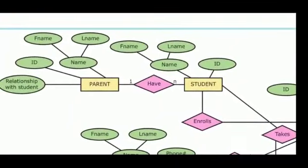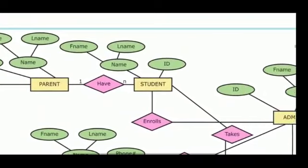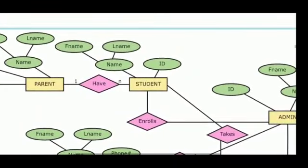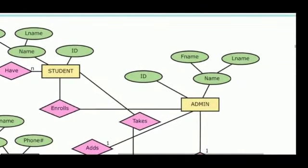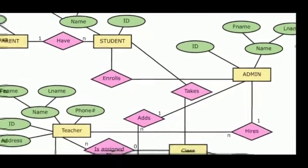For the Parent entity, the attributes are: name, last name, first name, and ID, along with relationship with student. For the Student entity: name, first name, last name, and ID. For the Admin entity: ID, first name, name, and last name.